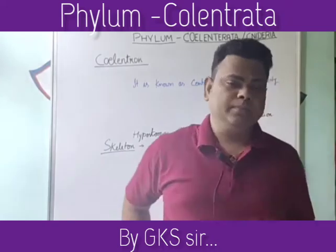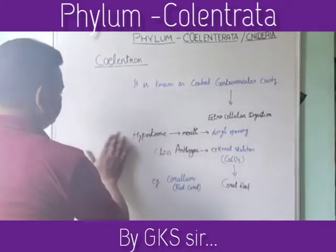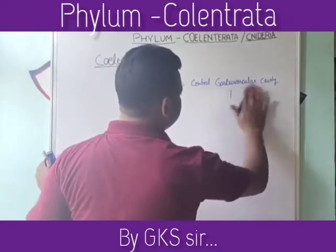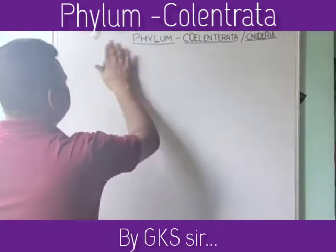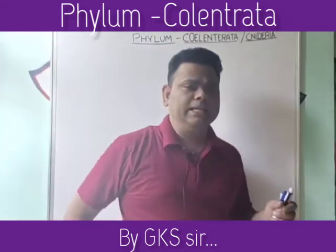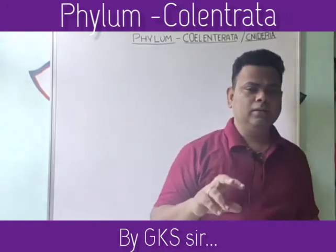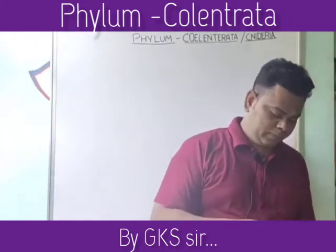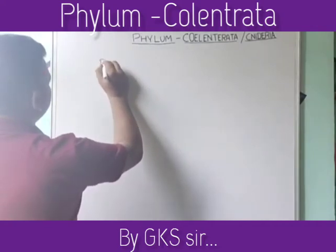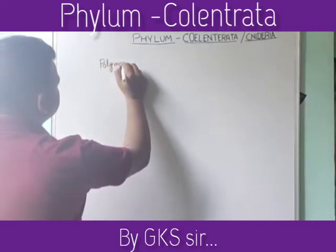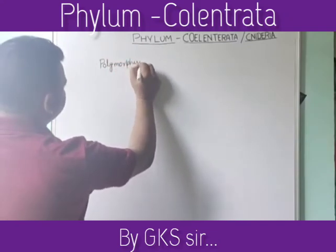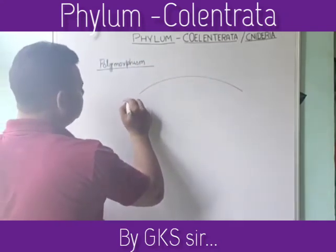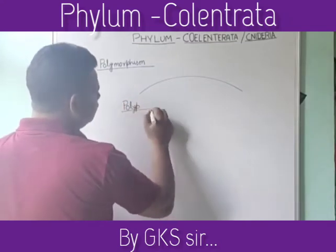The next heading is polymorphism. Polymorphism means existing in more than one form. In Coelenterata, polymorphic stages are observed — some members are found in the polyp form and some members are found in the medusa form.